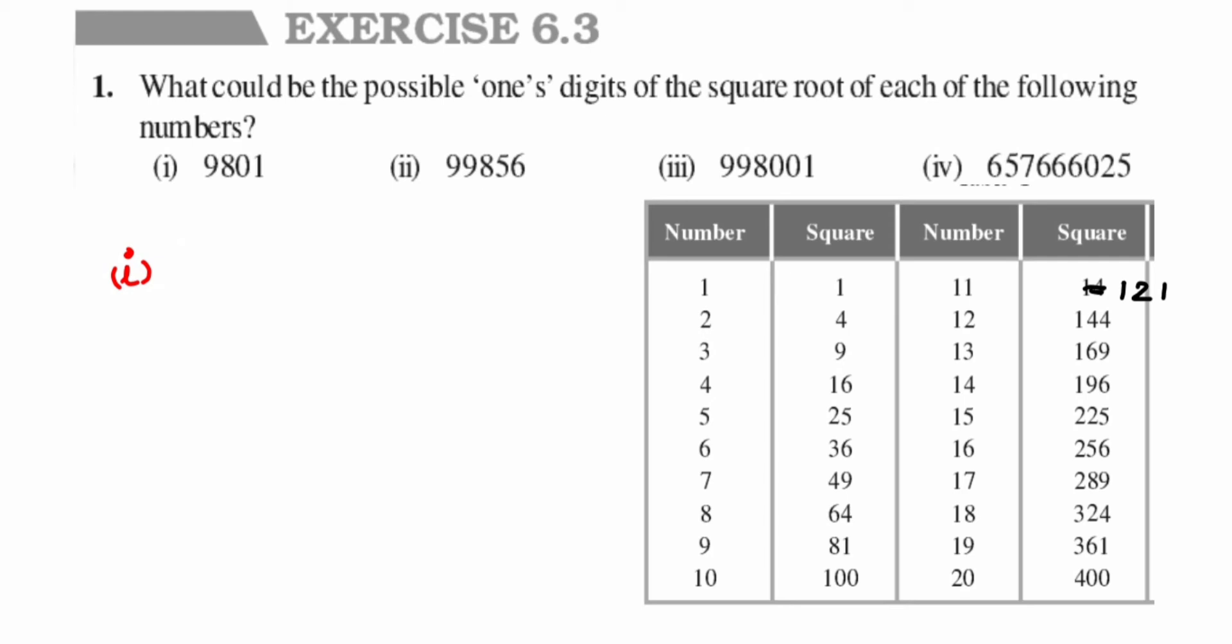This number is ending with 1, so 9801 is a square of some number. We don't know which number it is, so I'm going to take an example of 1 here. 1 squared is 1, means square root of 1 will be 1. Similarly, I have 81. If I take a square root of 81, I'll get 9. 9 in the unit place, so I'll get 9.